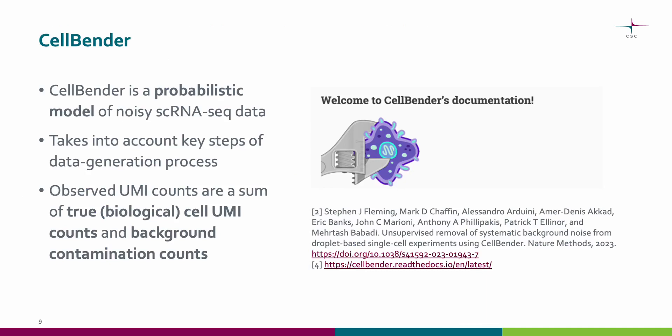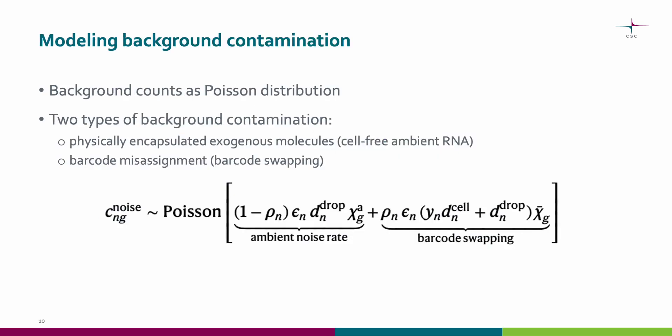So how does CellBender remove background contamination? CellBender is a probabilistic model that takes into account key steps of the data generation process, including droplet formation and cell encapsulation. CellBender models the observed UMI counts as a sum of true biological cell UMI counts and background contamination counts. The background contamination counts are drawn from a Poisson distribution, where the noise rate originates from two different contamination processes, which include cell-free ambient RNA and barcode swapping.